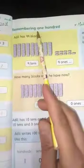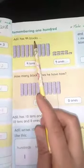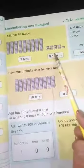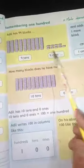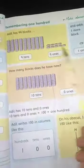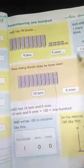Remembering in 100. Adil has 99 blocks. Adil ke paas 99 blocks hai. And ones kitnay hai? Nine ones hai. So, isko hundred karna mein kitnay blocks ki zaroorat hoogi? One block ki zaroorat hoogi.